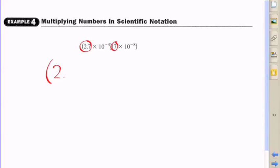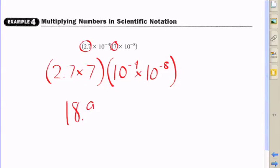First, we want to multiply the two numbers that come first in each set of parentheses, the 2.7 and the 7. We'll multiply them together and we'll also multiply the bases of 10 to the negative fourth and 10 to the negative eighth because they have the same base, which will make our job a lot easier.